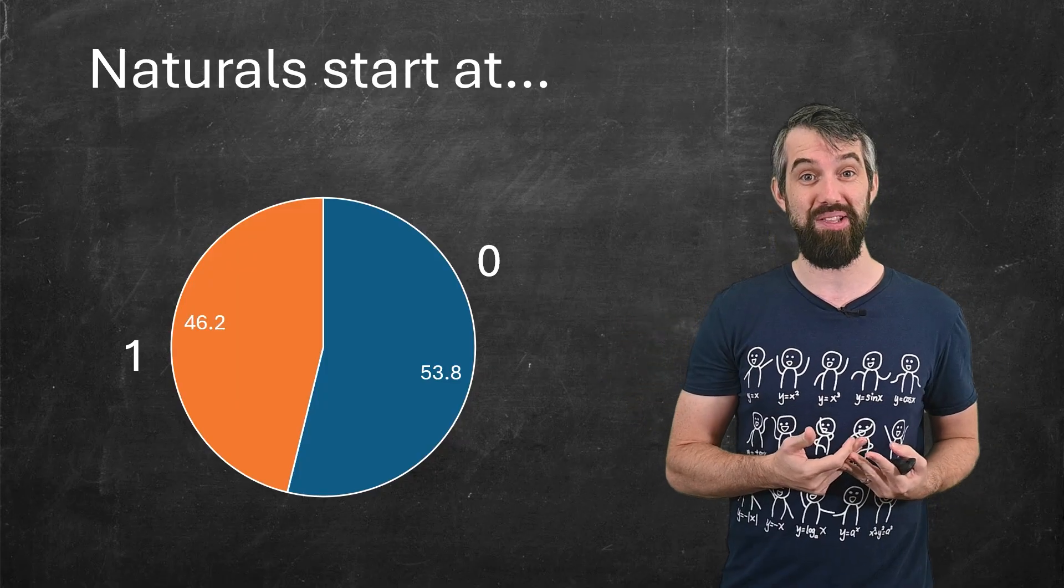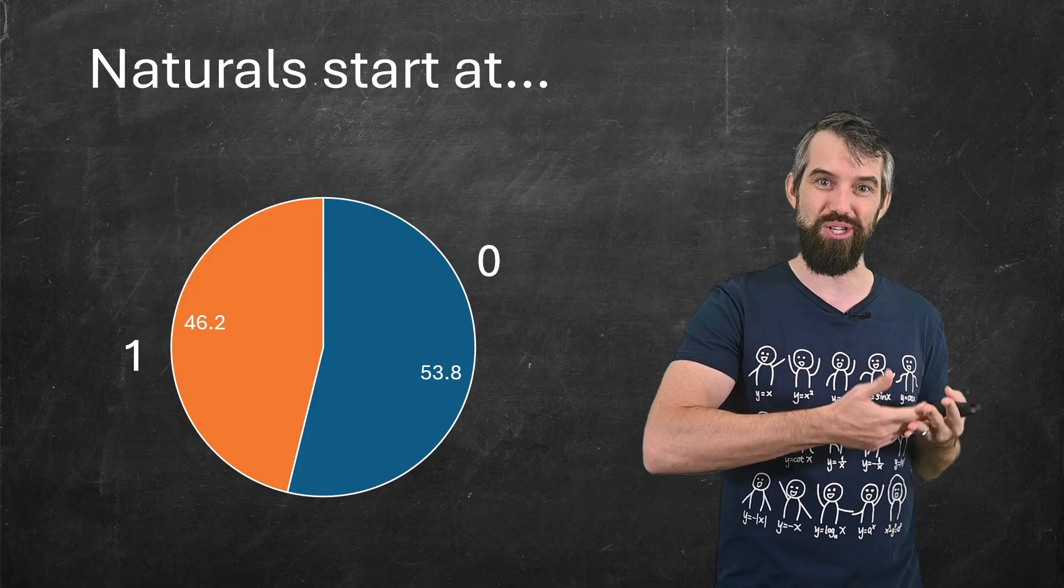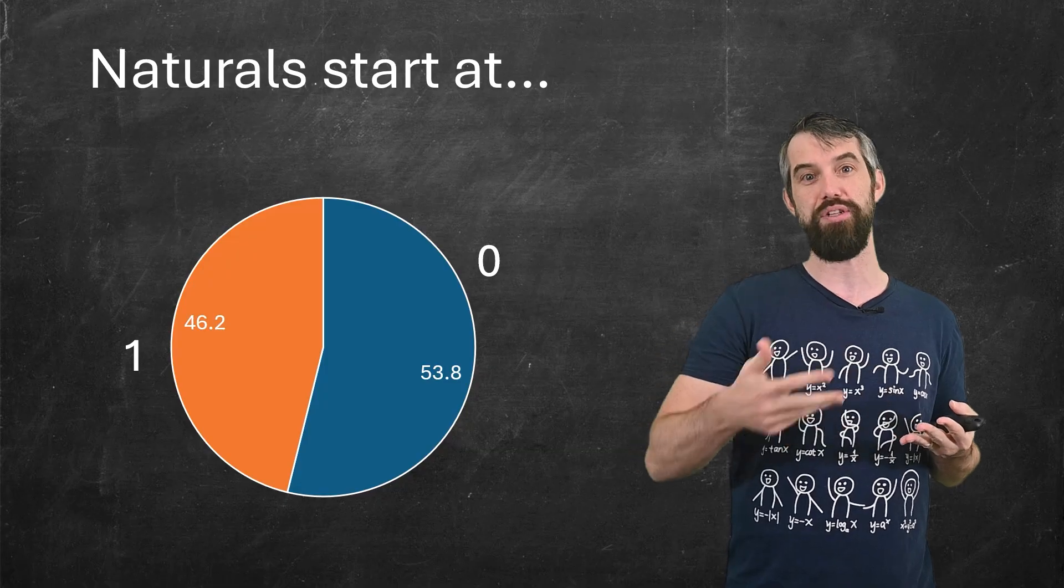Well, a little over half of people think yes, they do include zero. A little under half think no, they don't include zero. Is it zero, one, two, three, or is it just one, two, three?